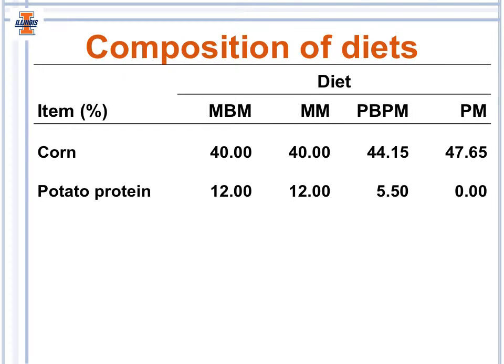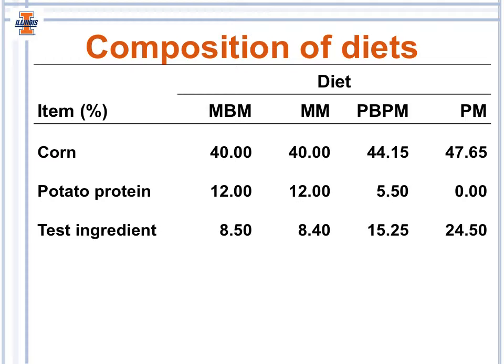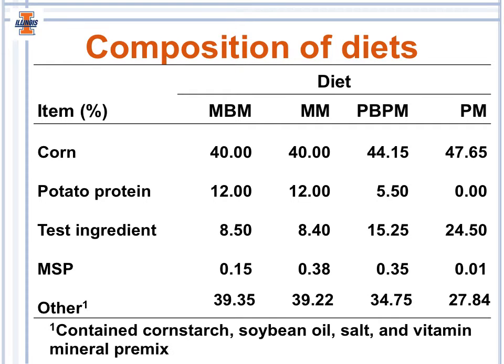The diets were primarily corn and potato protein diets. The corn concentration varied slightly to keep the phytate concentration equal across all diets. Potato protein was adjusted to keep crude protein concentration the same across all diets. Because calcium was supplied entirely by the test ingredient, the inclusion levels of meat and bone meal, meat meal, poultry byproduct meal, and poultry meal differed to provide the current requirement for calcium, at 8.5%, 8.4%, 15.25%, and 24.5%, respectively. Monosodium phosphate supplied some phosphorus to meet the requirement of 0.33% digestible phosphorus. Other diet components included cornstarch, soybean oil, salt, and a vitamin and mineral premix.